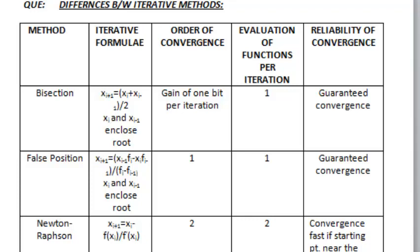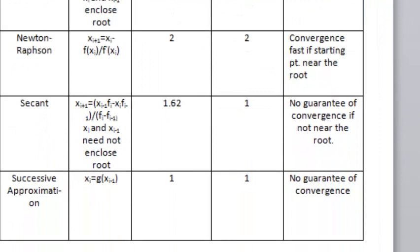For false position and successive approximation, it is 1. For secant method, it is 1.62. And it is highest for Newton-Raphson method, it is 2.